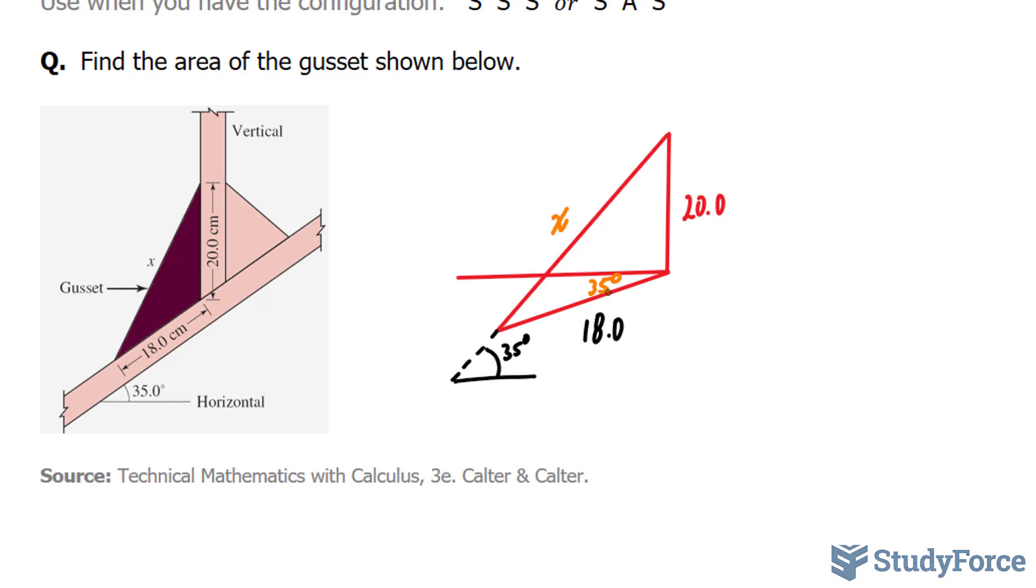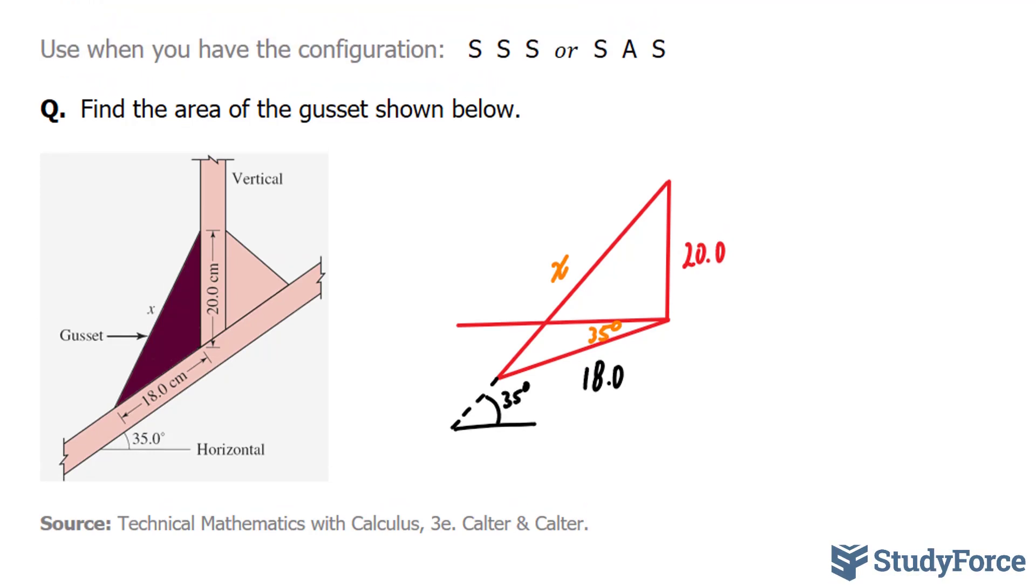That being said, in order to use the cosine law, you have to have a configuration where you have side, side, side, and in our case we don't, or side, angle, side. So we have side, we don't have this angle, but we will derive it soon, and we have this side.